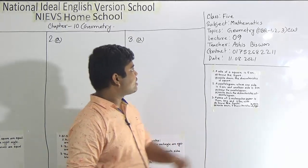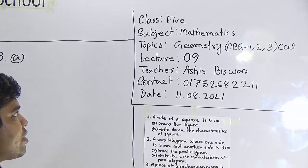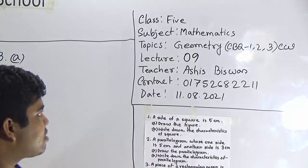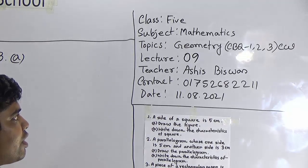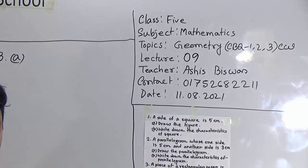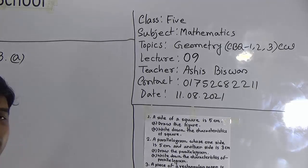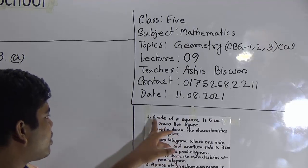Today is our lecture number 9 of the annual term. Today's topic is Geometry. We shall solve CBQ number 1, 2, and 3 as your classwork. There is good news — there is no homework today. But this class is very important for your annual term. We have already learnt this type of math in our half-yearly exam, so in this term we revise it again. So first, we read question number 1.